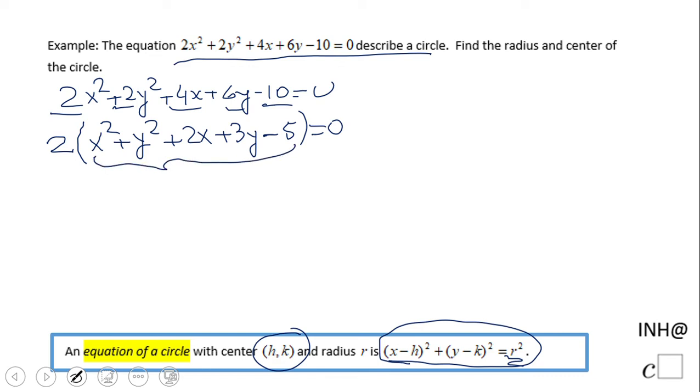Because what we can do now, we can cancel out the 2, right? Because we can divide by 2. Then 0 divided by 2 is 0. So in fact we get this form: x squared plus y squared plus 2x plus 3y minus 5 equals